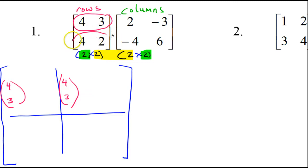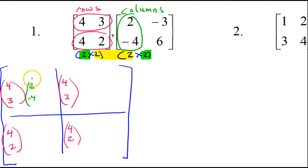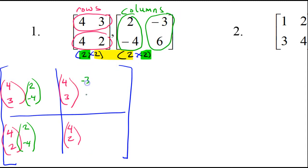Now let's do the second row. The second row is 4, 2, so I'm going to put 4, 2 all the way across the second row. Now let's do columns. This is my first column — the first column belongs in the first column, so that means here and also here. This is the second column — the second column goes in the second column, so I'm going to put negative 3, 6 here and here.